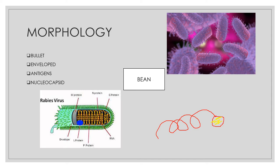The nucleocapsid has helical symmetry and comprises negative-sense single-stranded RNA, along with nucleoprotein and the L and P proteins, which form the RNA polymerase. So the nucleocapsid consists of the negative-sense single-stranded RNA, the L and P proteins (RNA polymerase), and the nucleoprotein. The two major antigens of rabies are glycoprotein G and the nucleocapsid.